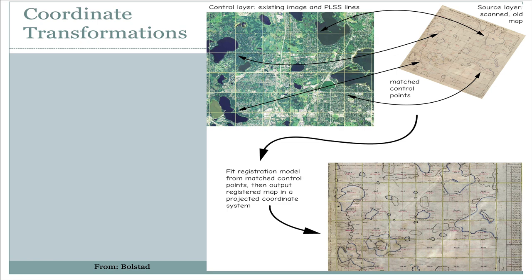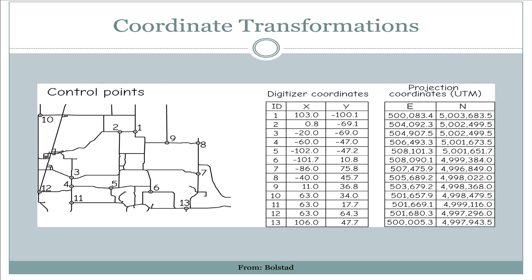We take the scanned-in old map, we use control points, and then we move it to the new coordinate system by a registration model where all of those pixels in the scanned map will be moved to their proper location in the projected coordinate system. The control points are what we start with — they are the anchors, the points that are attached and remain in the correct place when they move. Then, depending on the transformation, everything else just moves along with them. We don't need points all along each individual road; we just need the 13 points shown here.